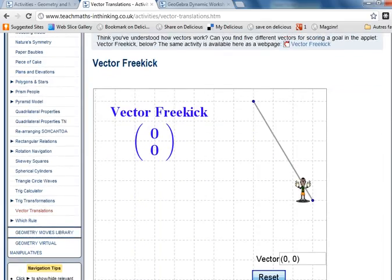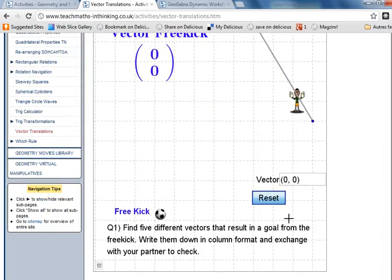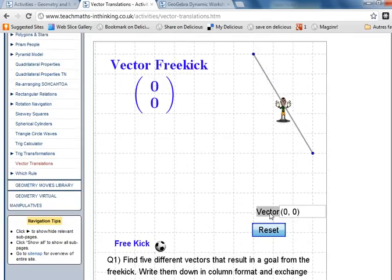Towards the end, you're going to see if you've understood how vectors work. You've got to find five different vectors that result in a goal being scored from this free kick position. So here I enter my vector. Now that's not official notation - normally that's how you define a coordinate. There's the official notation, column vectors. But you have to enter your vector down here. First of all, I think it might be a 3-4 vector, so I'm going to give that a go.